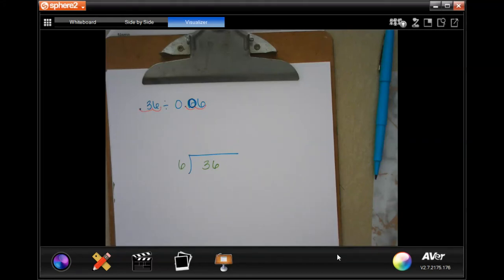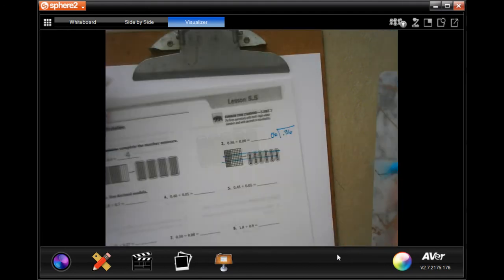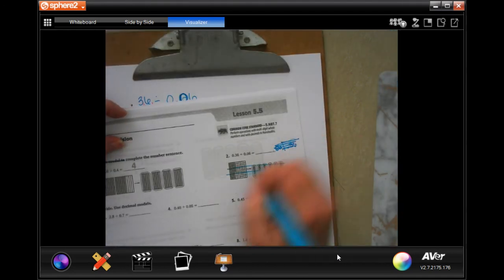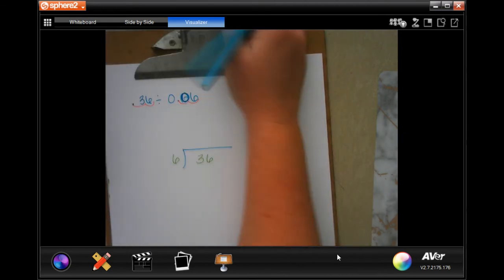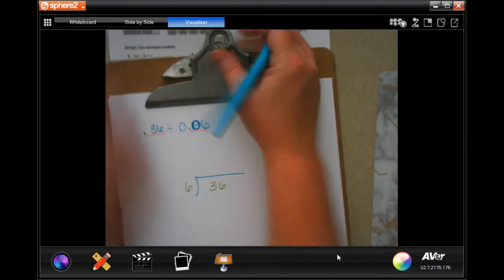Hi guys, welcome to Chapter 5, Lesson 5.5 for fifth grade. We're going to get started with number two. For our purposes, we are not going to be using the models that they show. We're going to be doing the math, and I will show you how to do that. We're going to start with number two, and the biggest thing you need to know about dividing decimals is...